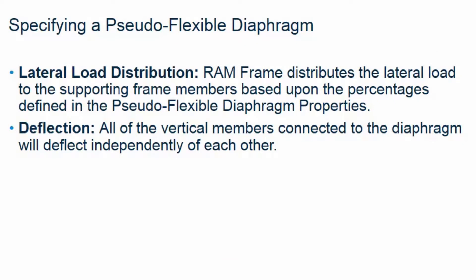In this video we're going to be focusing on how to analyze a model with pseudo flexible diaphragms assigned to it. In a pseudo flexible diaphragm analysis, the stiffness of the vertical lateral load resisting system is significantly greater than the stiffness of the diaphragm. RAM Frame would distribute the lateral load to the supporting frame members based on the percentages defined in the pseudo flexible diaphragm properties, and all the vertical members connected to the diaphragm will deflect independently of each other.